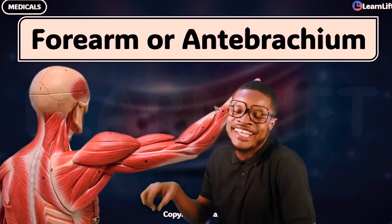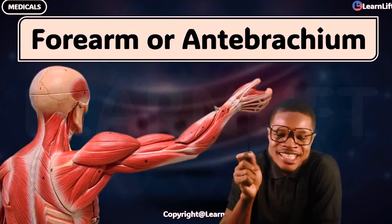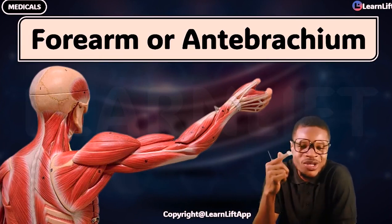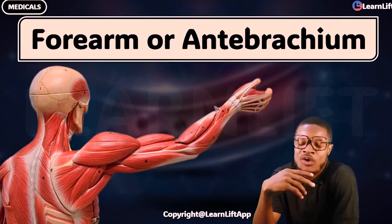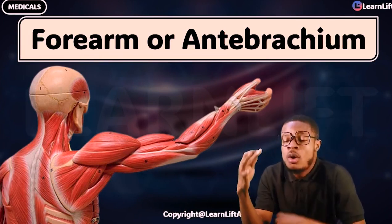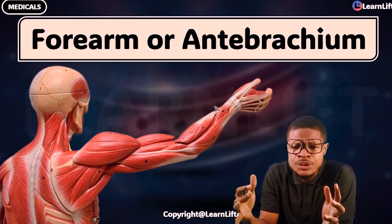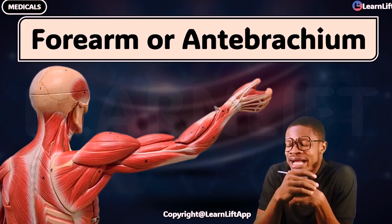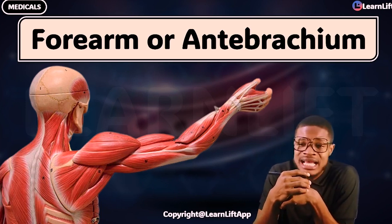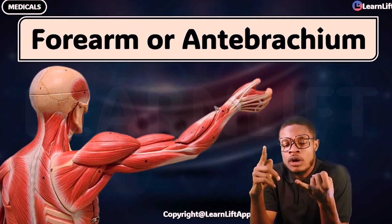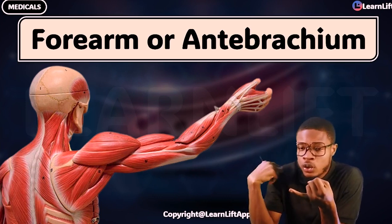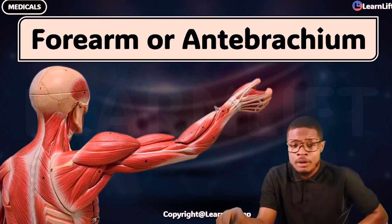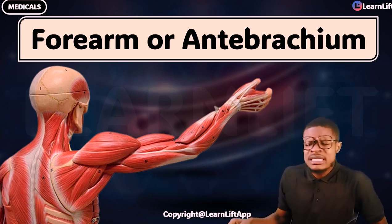This is Lesson 1B, still under Lesson 1, part of the upper limb. We're going to continue and look at everything about the forearm or anti-brachium, as well as the hand. We have already learned everything about the shoulder and the arm or brachium.